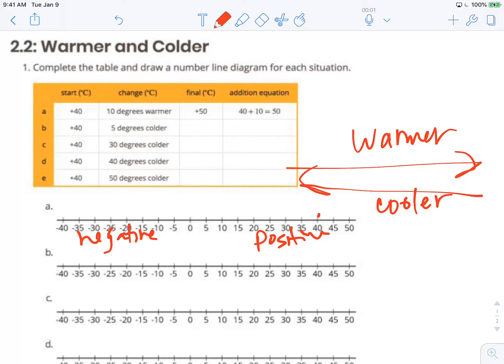So we're going to start at positive 40. We're going to move 10 degrees warmer so we need to move 10 degrees to the right and we end at positive 50. So we can write that as positive 40 plus positive 10 gives us a final temperature of positive 50.